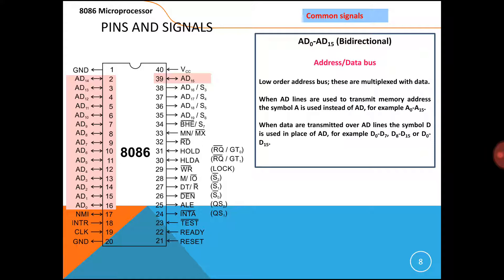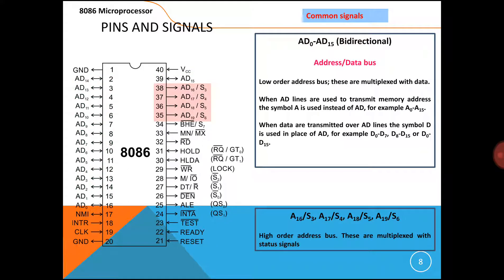There are four clock states: T1, T2, T3, TW, and T4. During T1, address is available on the system bus. From T2 to T4, data is available on the system bus.